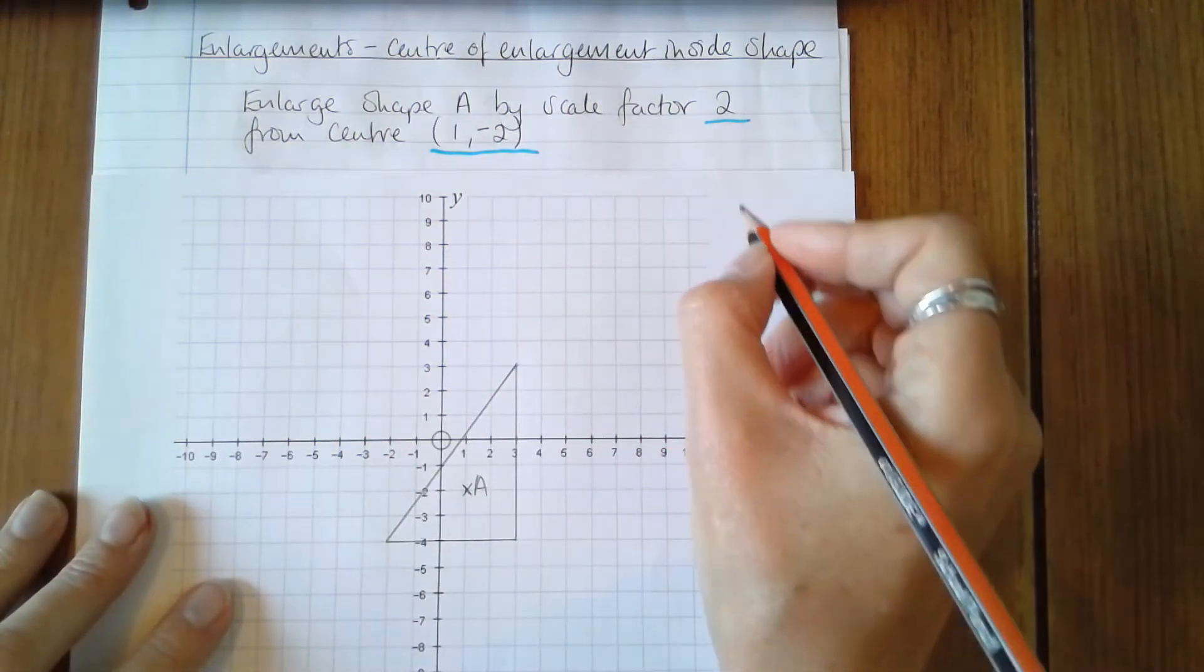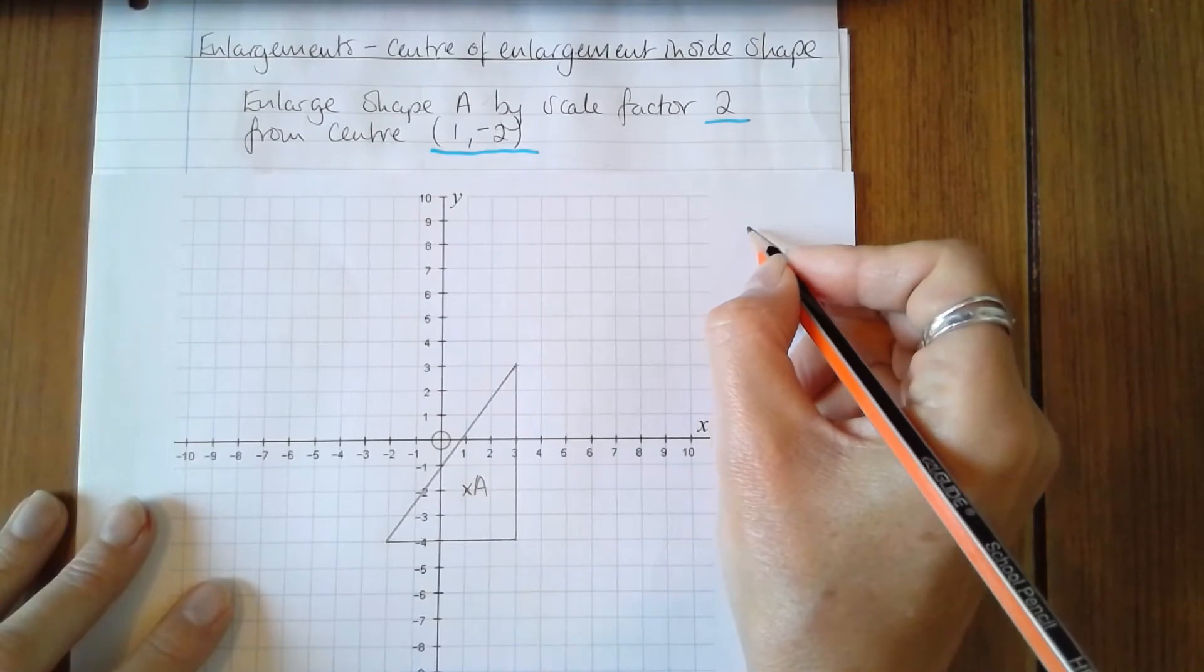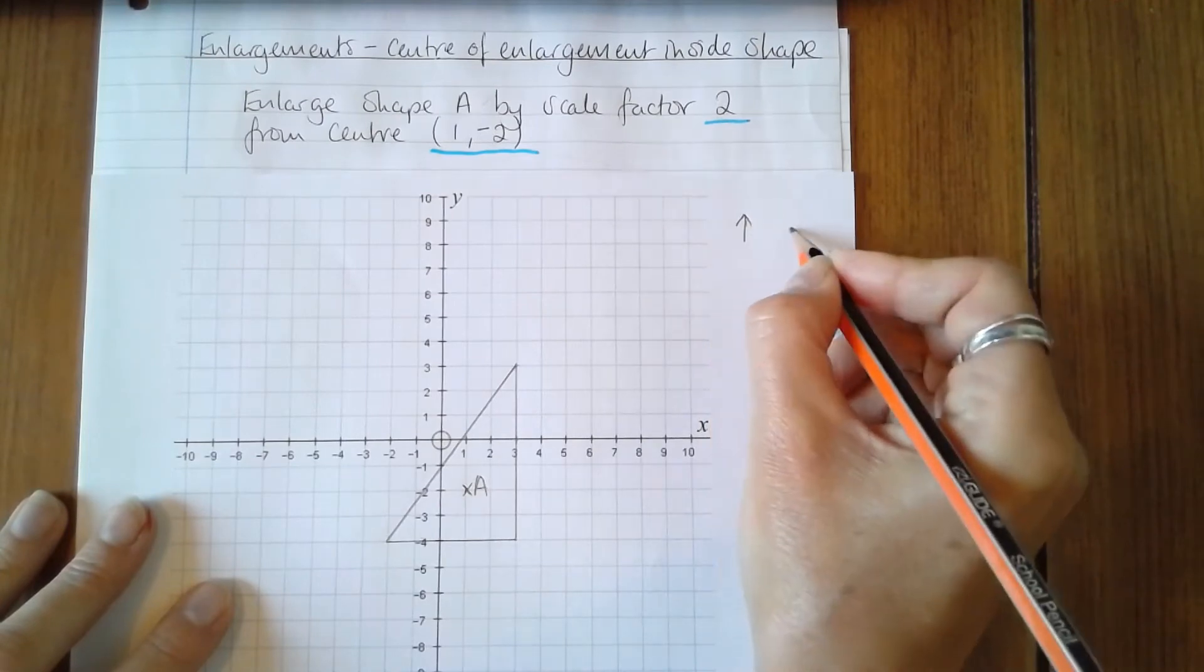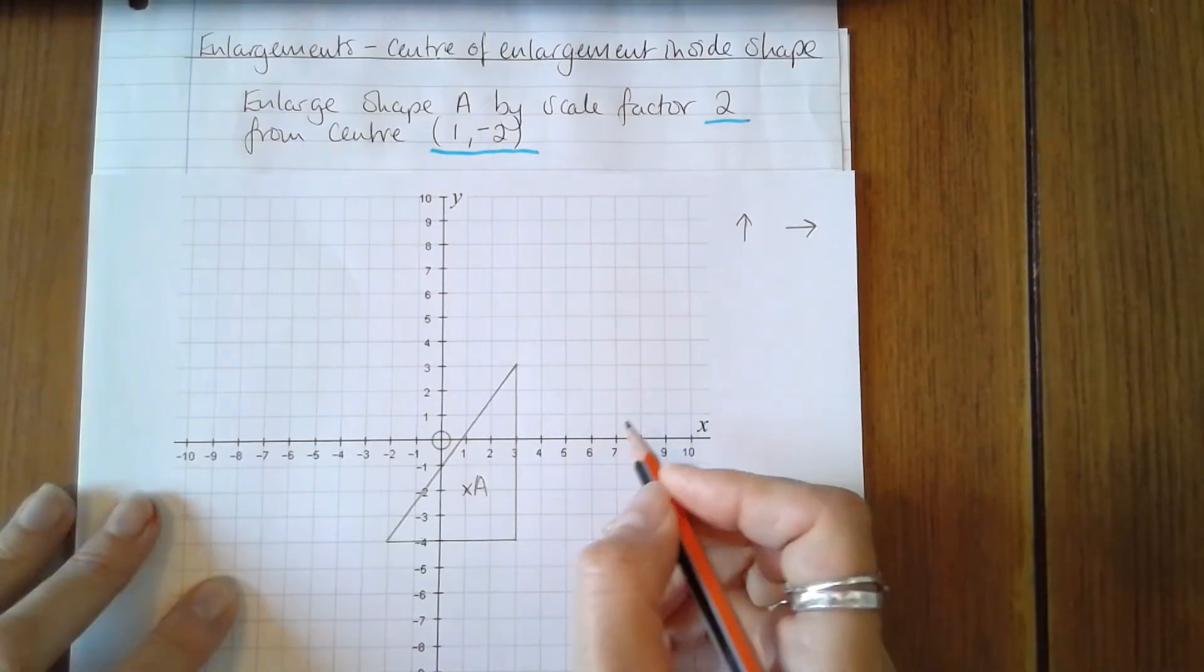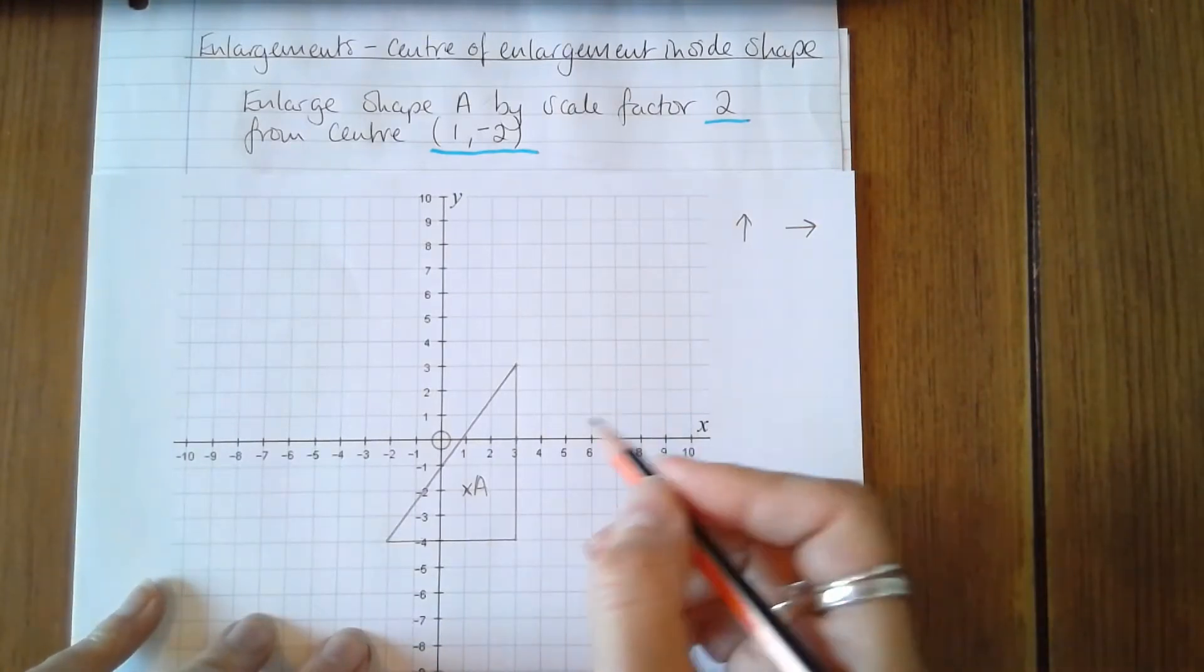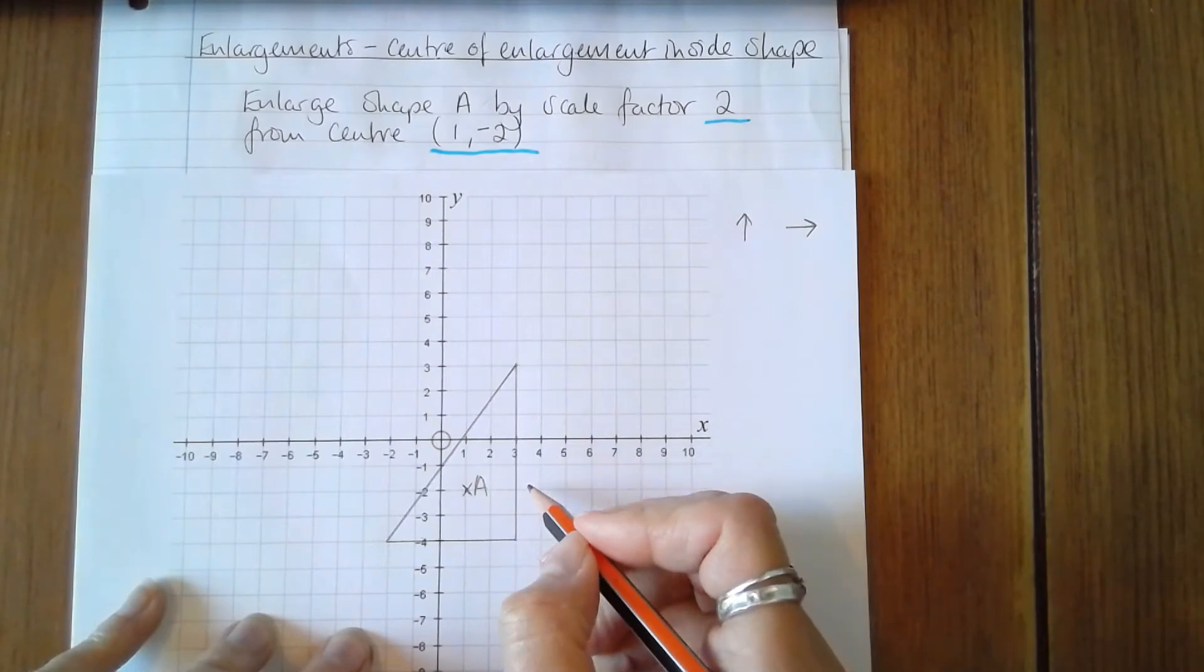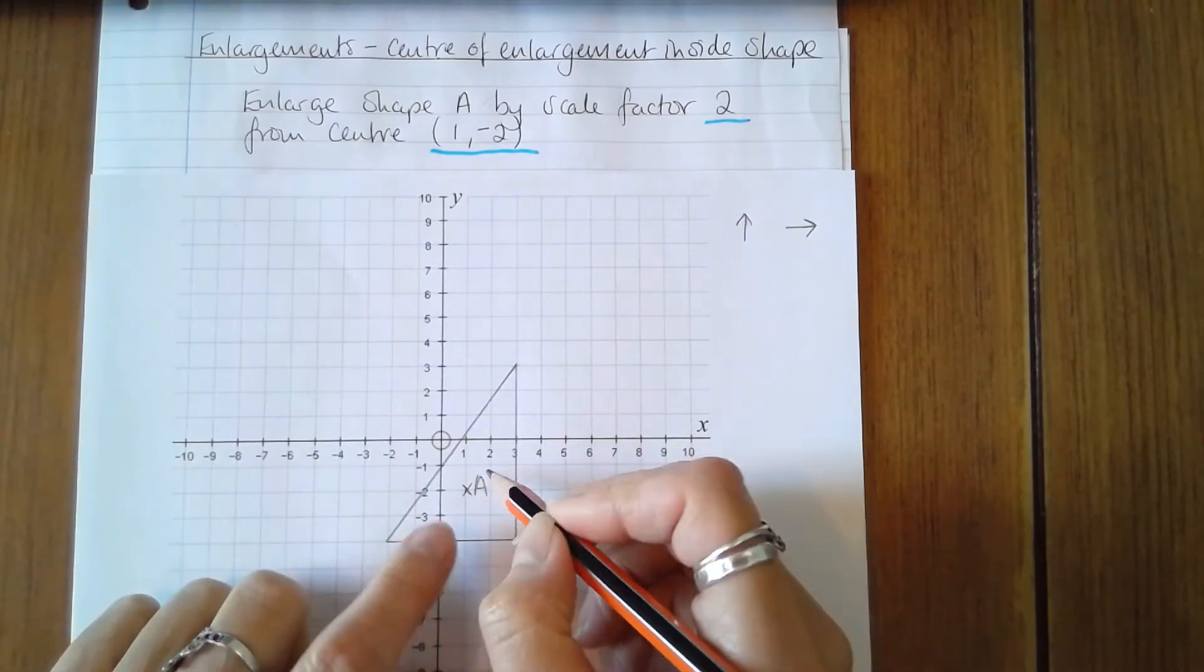So I'm going to use counting squares and mark down how much I count so that I can multiply by 2, and that way I won't forget my counting and end up marking the point in the wrong place.